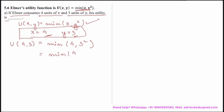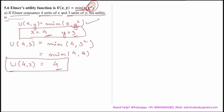Solving this, we get minimum of 4 and 9, which is 4. So the utility at (4, 3) is 4. Note that if you ignore the y squared and just take minimum of 4 and 3, you might think the answer is 3. But y is taking the functional form of a square, so even though the consumer is consuming a lesser quantity of y, he is still getting a higher level of utility, which is 4. Keep in mind the functional form given and do not just take the minimum of both quantities directly.